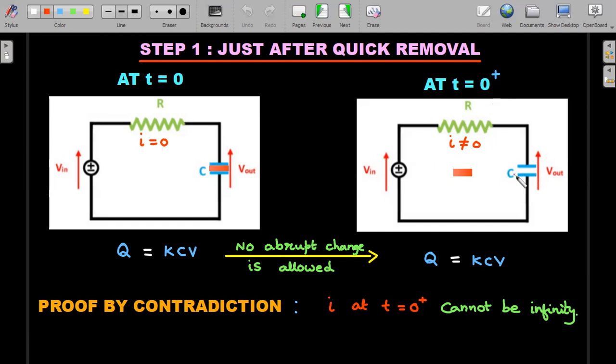Once you abruptly remove this and consider the right-hand side situation at t equals zero plus, that means just after removal, the current starts flowing. The reason is very simple. Now the capacitance has changed its value to C and therefore the potential difference would abruptly change. Since the potential difference across this and this don't match, there will be some current that would be flowing.